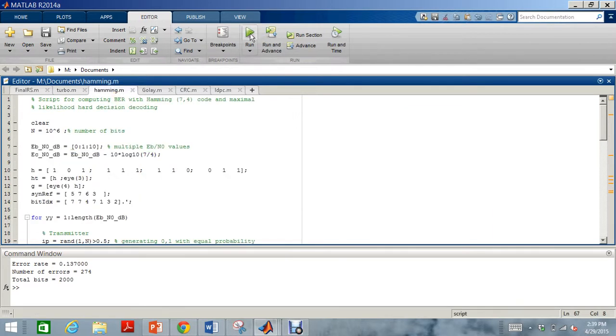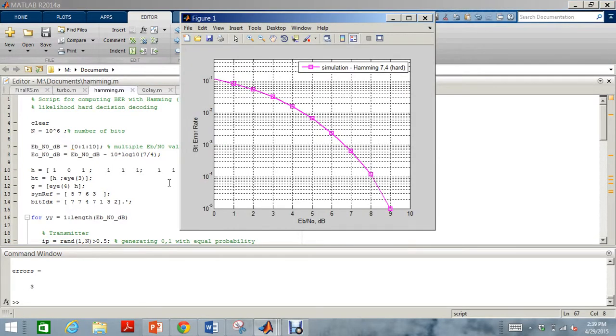Moving on to the Hamming codes. The Hamming codes are similar to the RS codes and they are also known as perfect codes. Now as you can see the errors are being detected and reduced. So now they have been reduced to three errors. The three errors could not be rectified. Now this is the BER versus SNR graph.